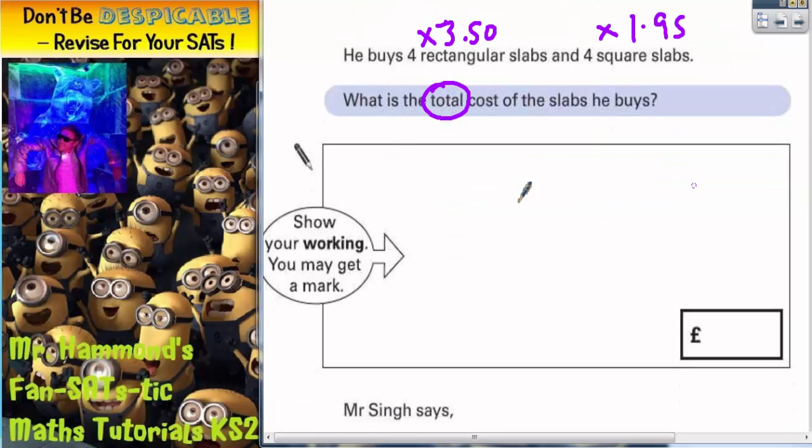So all we've got to do now is work this out. So we want £3.50 times by four, for the rectangular ones. So four lots of zero is zero. Four lots of five is 20, carry the two. Four lots of three is 12, plus that two is 14. So don't forget to put your decimal point in and your pound sign.